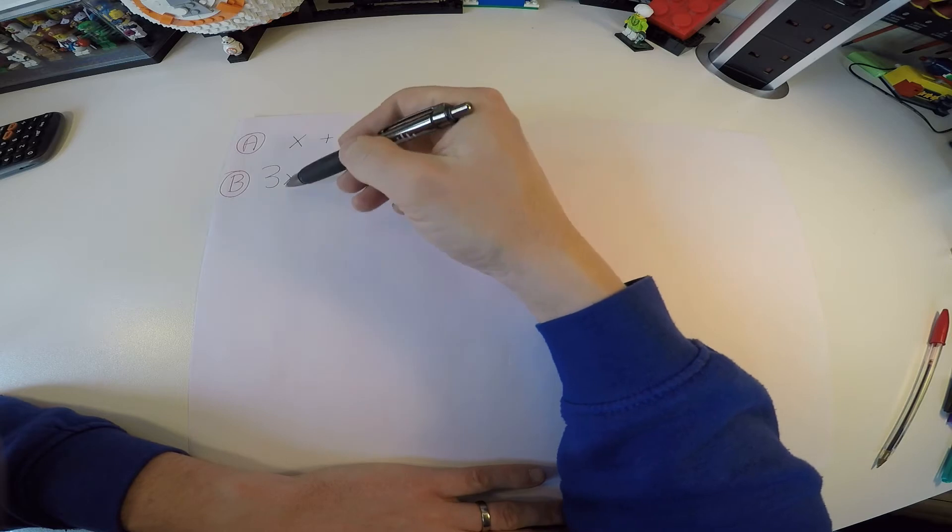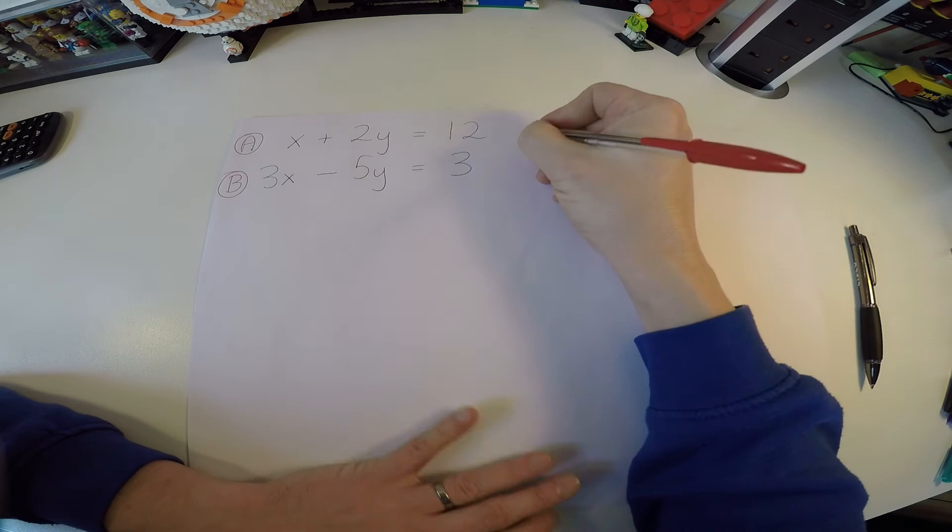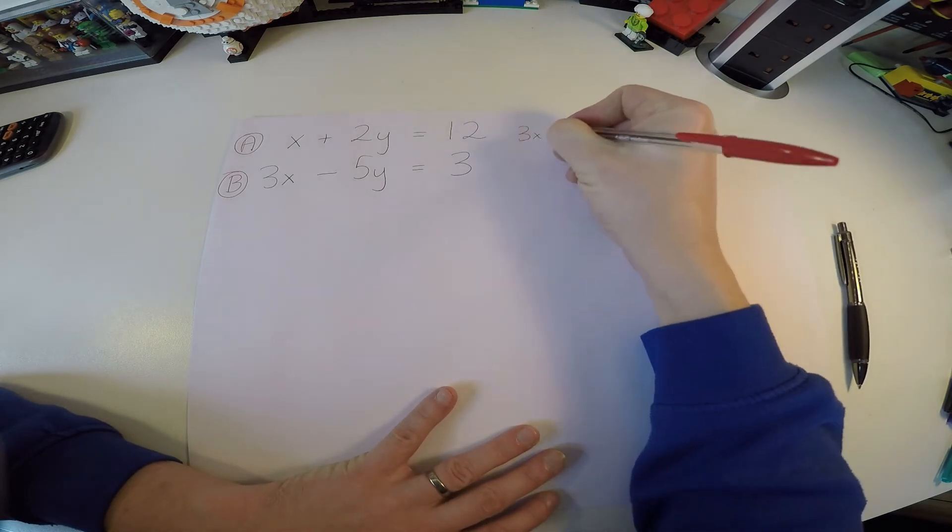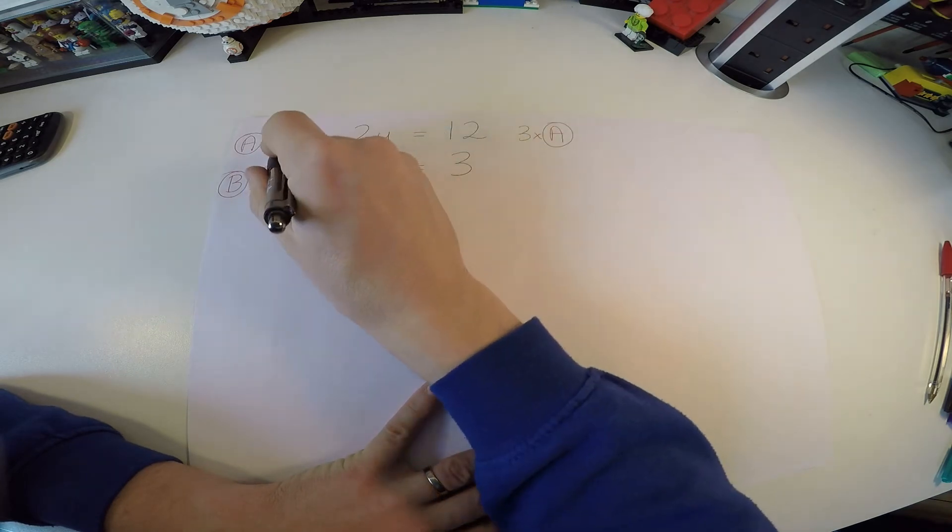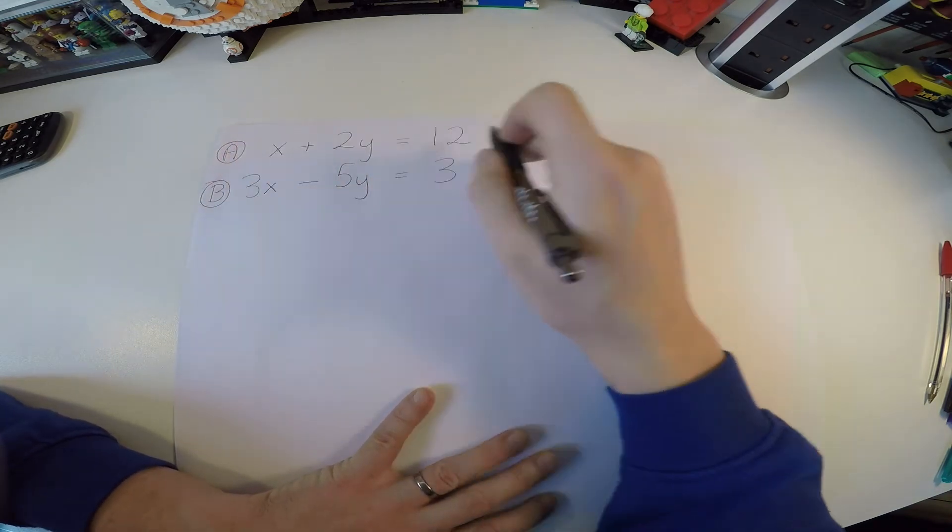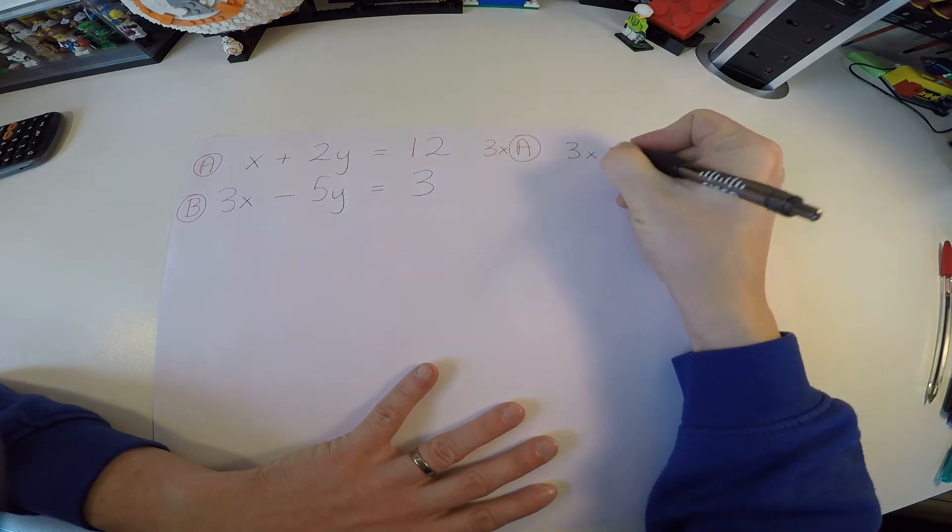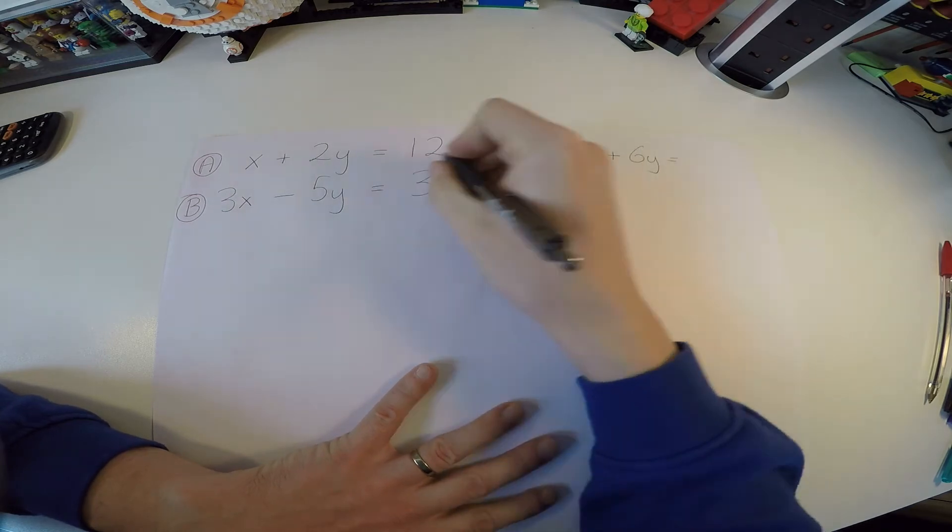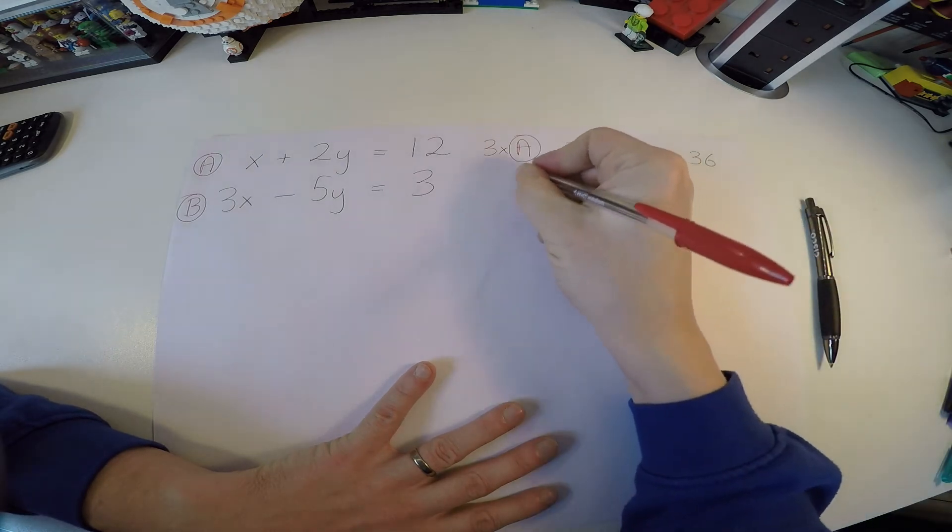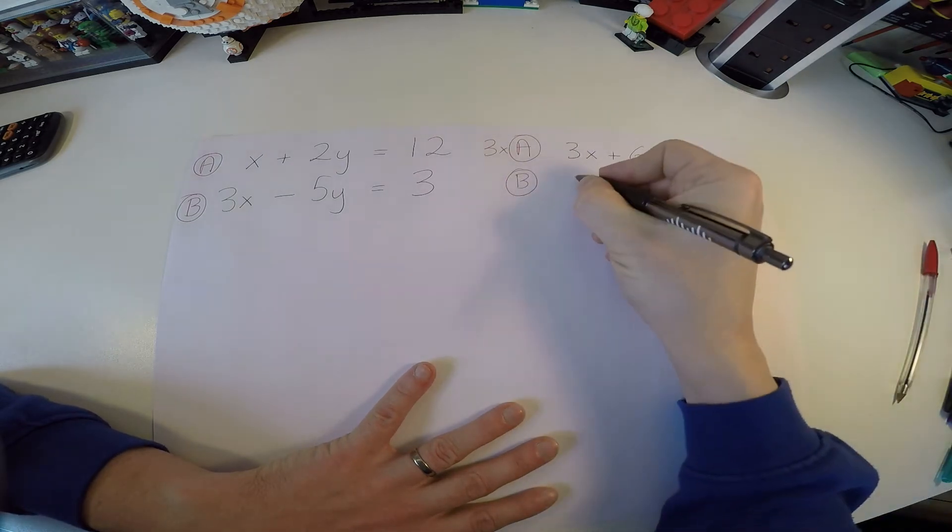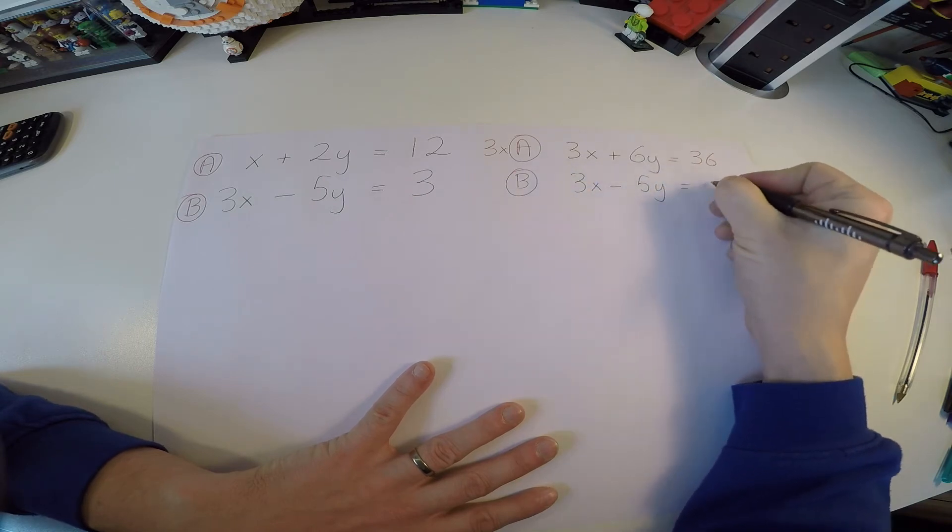So what can I do here? I'm going to need to get one of the coefficients or one of the variable terms matching. So what I'm going to do is I'm going to multiply a. I'm going to say 3 times a. If I multiply a across by 3, that will give me a 3x, which I need here. But of course I have to multiply every term by that. So 3 times a gives me this: 3x plus 3 times 2y, 6y equals 3 times 12, 36. b now still remains unchanged for the moment. 3x minus 5y equals 3.